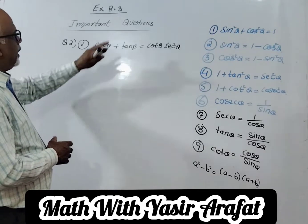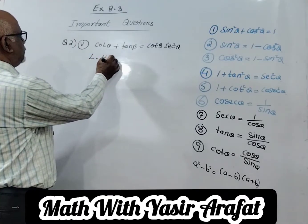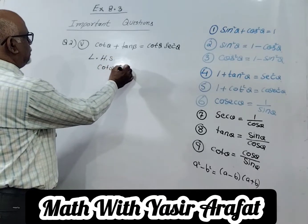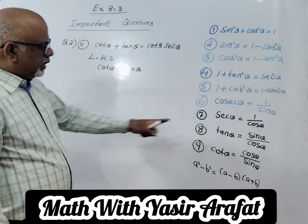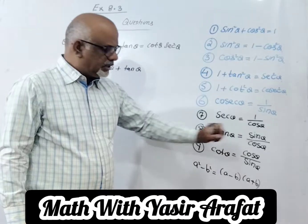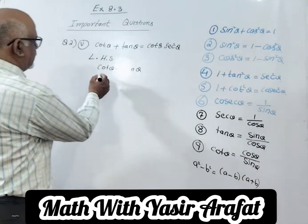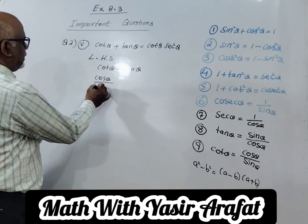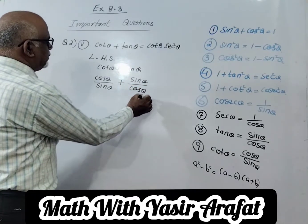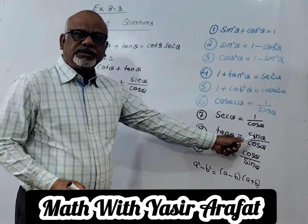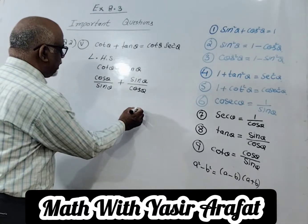This is question number 2 of the 5th part of exercise 8.3. We just have to take out the left hand side, which is cot θ + tan θ. Now, what is the value of tan θ? It equals sin θ over cos θ, and what is the value of cot θ? It equals cos θ over sin θ. We just have to put these values here — cot θ equals cos θ upon sin θ and tan θ equals sin θ upon cos θ.